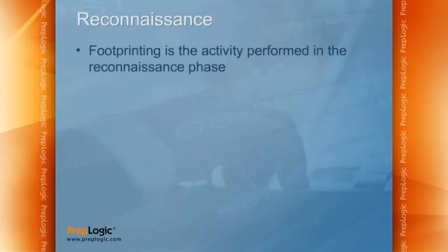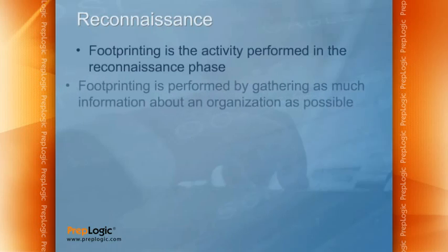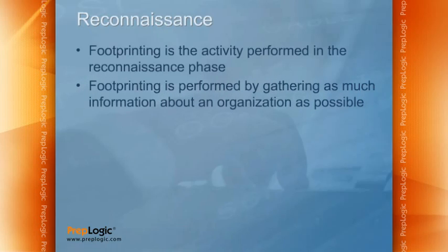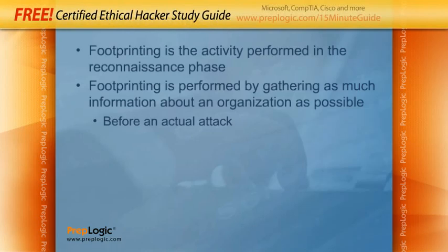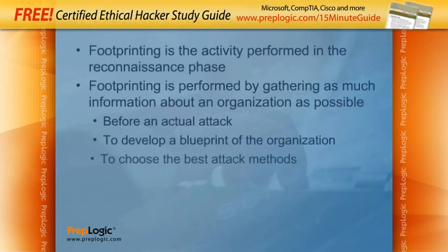When it comes to being a Certified Ethical Hacker, one of the things we want to do is understand how to identify as much as we can about an organization without actually touching that organization's network or systems. This is reconnaissance, or what we also call footprinting. We want to look at the different tools and techniques used to gather this information about our target. Footprinting is performed by gathering as much information as you possibly can about an organization before an actual attack, to develop a blueprint of the organization and to choose the best attack methods.